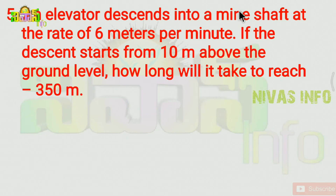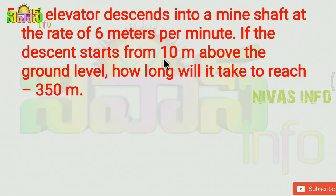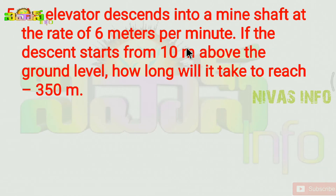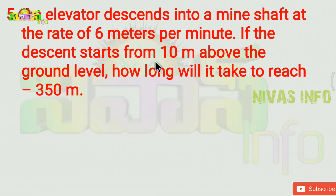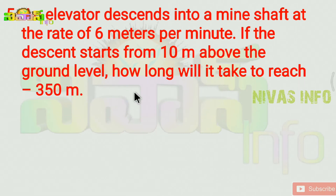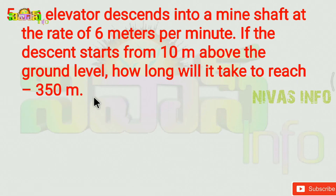An elevator descends into a mine at 6 meters per minute. It starts 10 meters above the ground level, and the target depth is minus 350 meters.